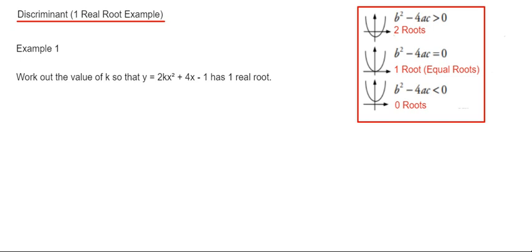First of all, I'm just going to write down the values of a, b, and c. So a is the number before x squared which is 2k, b is the number before x which is 4, and c is the number at the end which is minus 1.